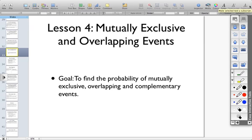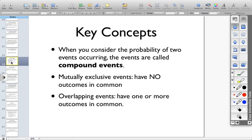Let's take a look at what some of these words mean. The concept here is when we consider the probability of two events occurring, the events are called compound events. Mutually exclusive events are events that would not have any outcomes in common at all. And overlapping events are events that have one or more outcome in common.